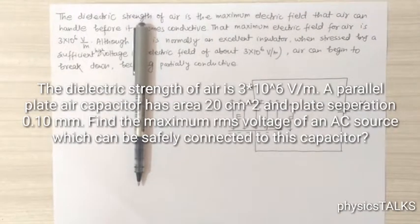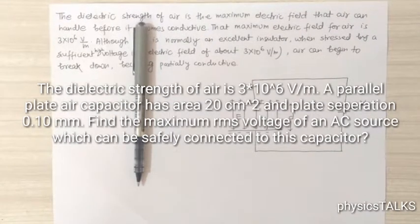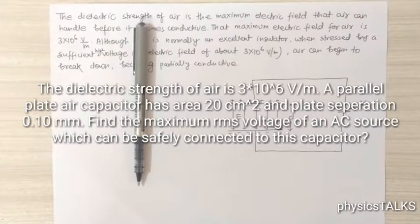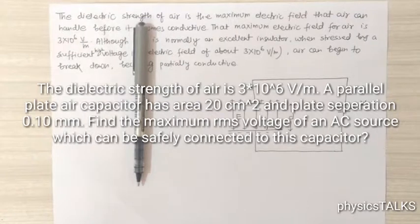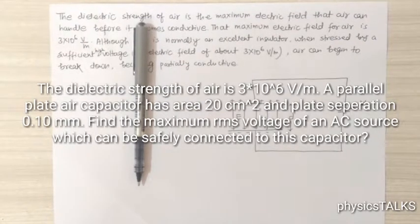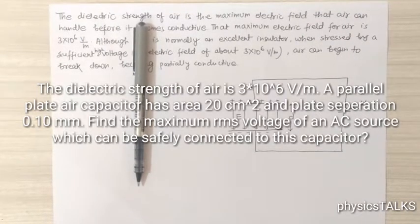The dielectric strength of air is 3×10^6 V/m. A parallel plate air capacitor has area 20 cm² and plate separation 0.1 mm. Find the maximum RMS voltage of an AC source which can be safely connected to this capacitor.